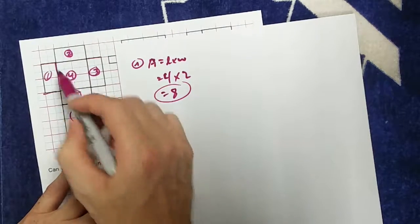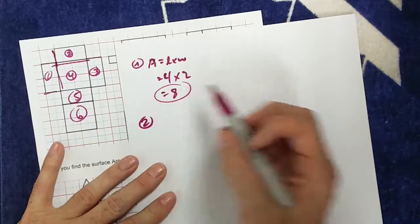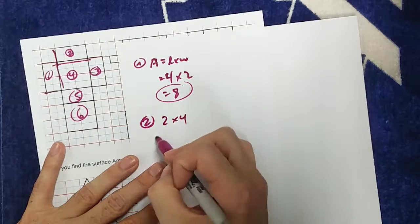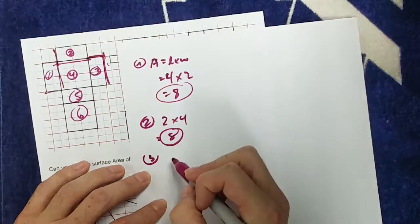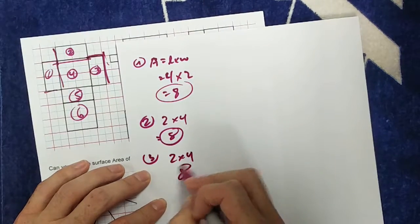The area of 2 up here, I have 2 by 4, so that's a 2 by 4, which is of course 8 as well. For 3, I have 2 by 4, so 2 by 4 is 8.